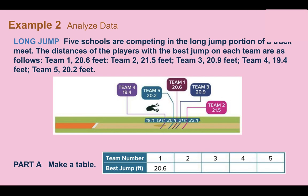Example 2 — analyze data: five schools are competing in the long jump. The distances of the best jumper on each team are: Team 1 — 20.6 feet, Team 2 — 21.5 feet, Team 3 — 20.9 feet, Team 4 — 19.4 feet, Team 5 — 20.2 feet. We can make a table pairing each team with their best jump.